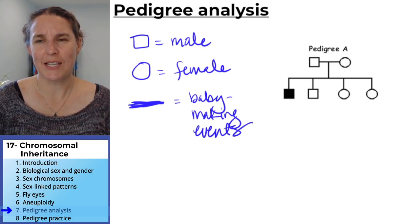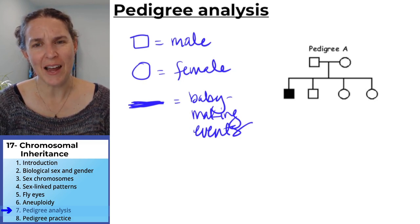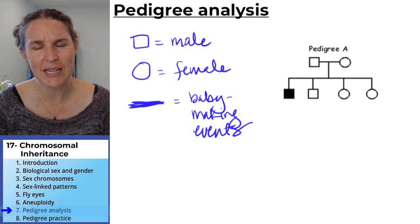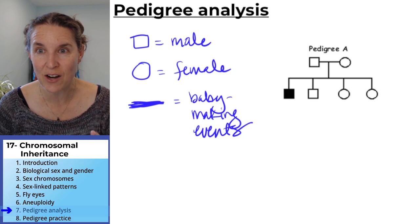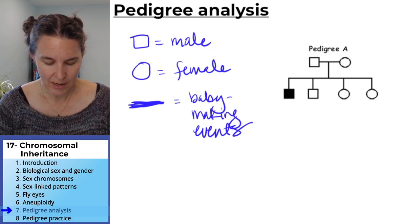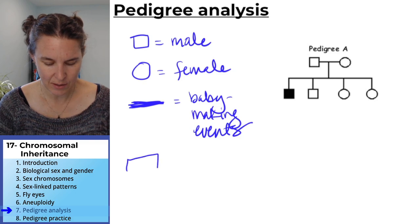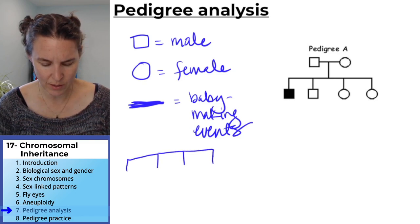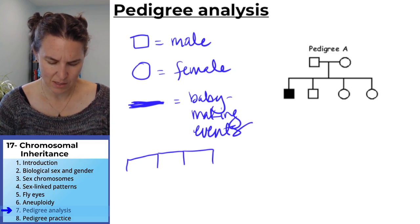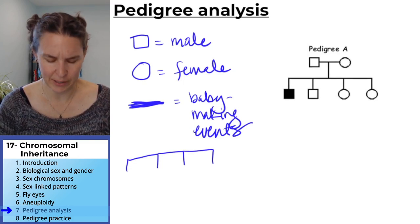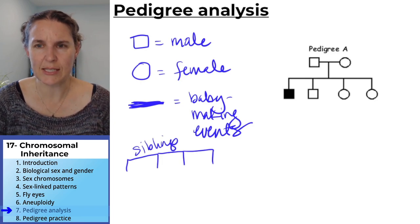We used to say those are marriages, but I don't think we need to say that. We just need to say that we made babies together. And then look carefully at this. Things that are connected with horizontal lines are siblings. I don't know if that's clear, but these are siblings.